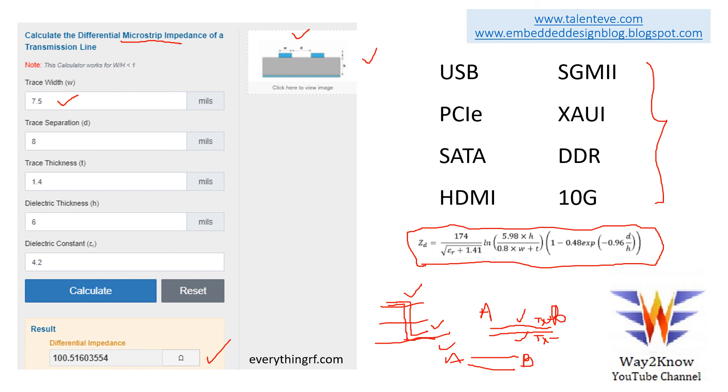Whether it be USB, whether it be PCIe, PCIe has several gens, SATA, HDMI, SGMII, XAUI, DDR, 10 Gigabit Ethernet. There are many advanced other ethernet interfaces that are available, but we just wanted to restrict this to the commonly used interfaces.